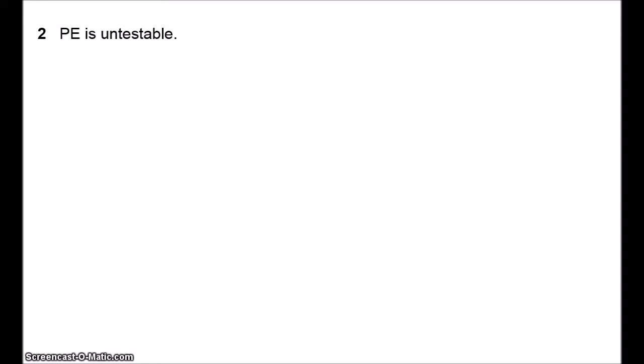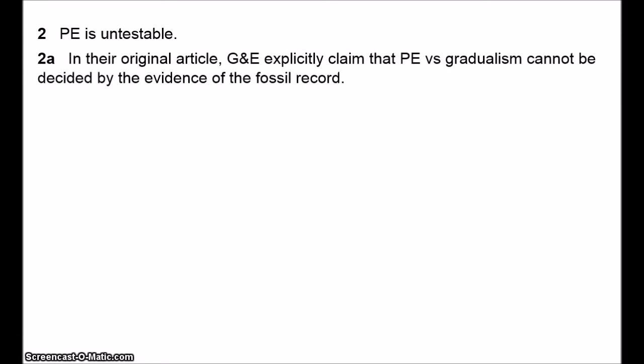Assuming that punctuated equilibrium does make substantial claims and isn't simply trivial, one of the main concerns has been whether it's really possible to test it. Some people have suggested that it isn't testable. Gould and Eldridge probably didn't do themselves any favours on this point, because in their original paper they explicitly say that punctuated equilibrium is simply another way of interpreting the fossil record and cannot be confirmed by empirical evidence. It's a way of seeing the fossil record, as is phyletic gradualism.